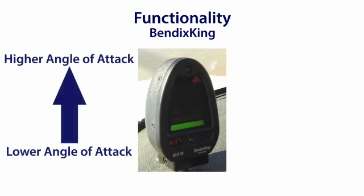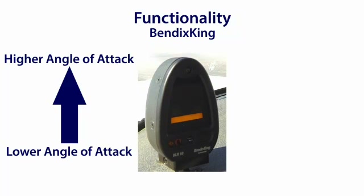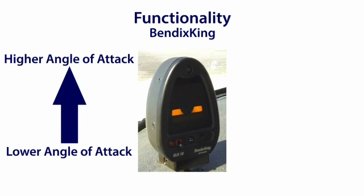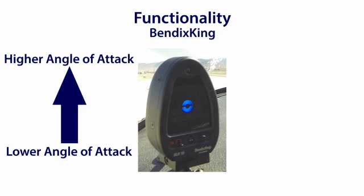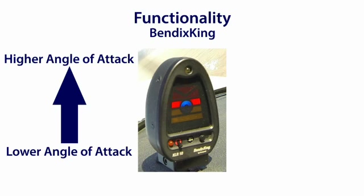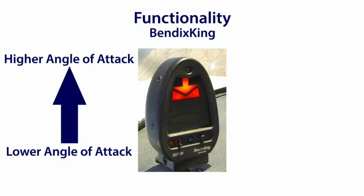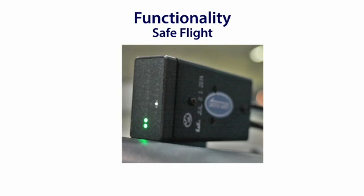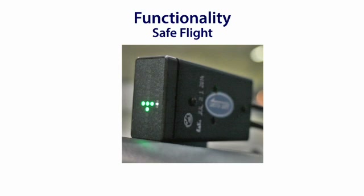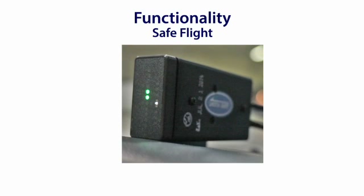The Bendix King device features an on-speed donut and a stall warning arrow indicating that the angle of attack must be reduced. It gives a verbal warning indicating that the pilot must take action to correct the AOA, usually in advance of the installed stall system for advanced stall warning. The Safe Flight device features an on-speed indicator and a series of multicolored dots indicating whether the aircraft is over or under speed, along with settable bugs for various maneuvers. It gives a Geiger counter-style warning when the aircraft is approaching stall, also in advance of the installed stall system.